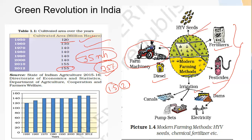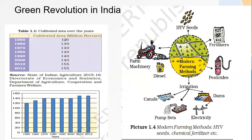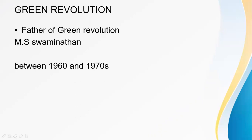The Green Revolution came in 1970, and the main reason behind it was HYV seeds. These seeds are genetically modified so that they can be resistant to pests and produce more crops. HYV seeds are also called the father of the Green Revolution. MS Swaminathan is known as the Father of the Green Revolution, and it came during the time of 1960 to 1970.